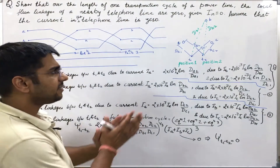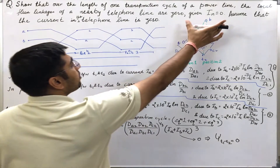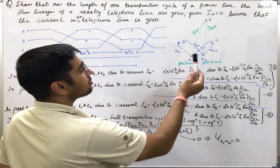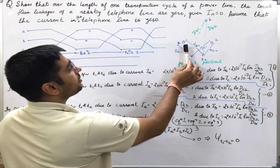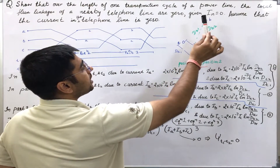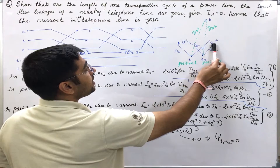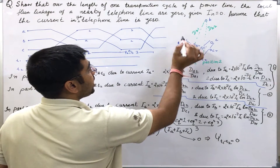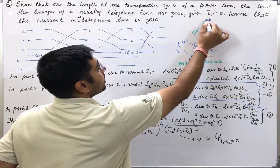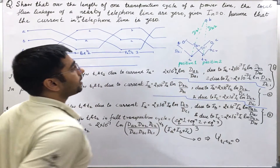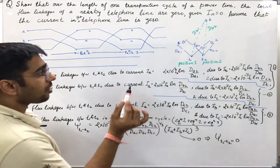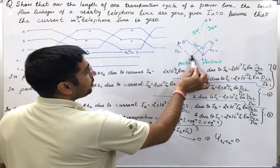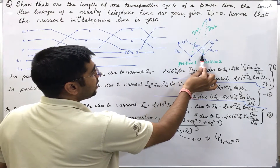Here is the scenario. I have drawn what is given in the question. The question gives us that there is a power line with phase A conductor, phase B conductor, and phase C conductor — these are the three conductors. And we are also given a nearby transmission line with two conductors T1 and T2.